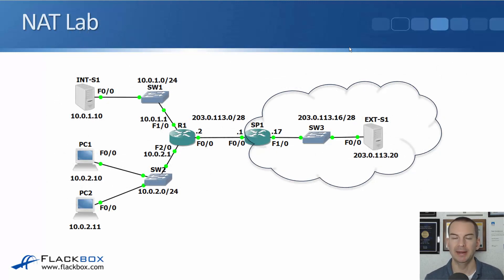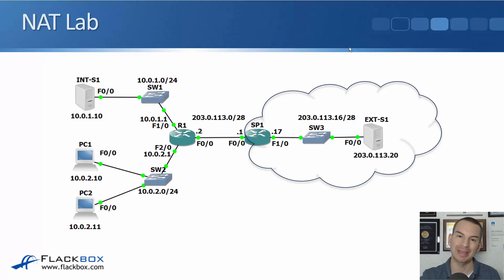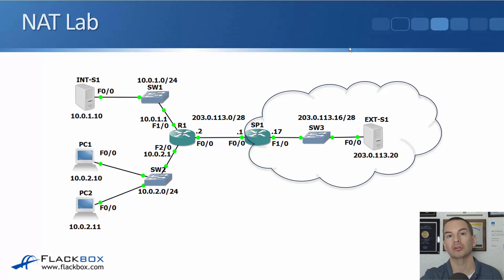Looking at our lab again, in the last lecture we configured a static NAT rule to give our internal server a fixed permanent public IP address so it could be reached by hosts sending incoming connections in from the internet. In this one, we're going to be doing NAT for our normal desktop PCs down in the bottom left on the 10.0.2 network. They're just standard desktop PCs, so they never need to accept incoming connections from the internet. Whenever they're communicating with the internet, traffic is always initiated by them in the outbound direction. They need to accept return traffic, but traffic is never initiated from the outside, so they don't need a permanent fixed public IP address.